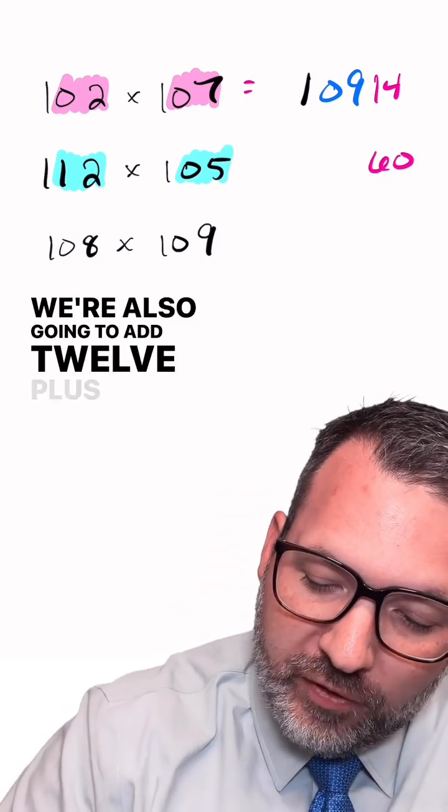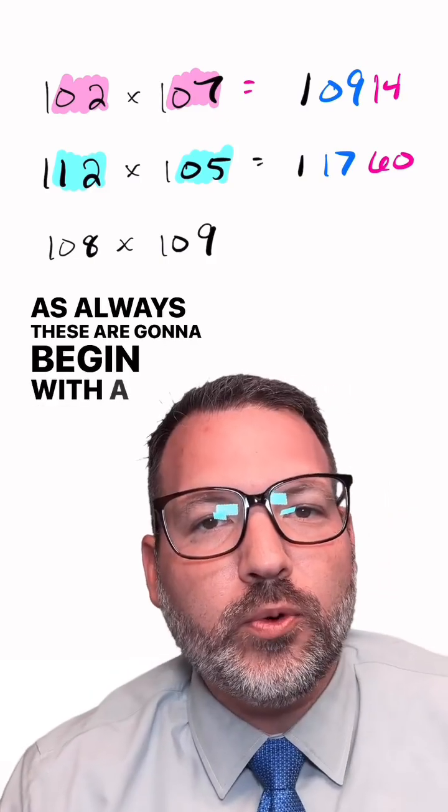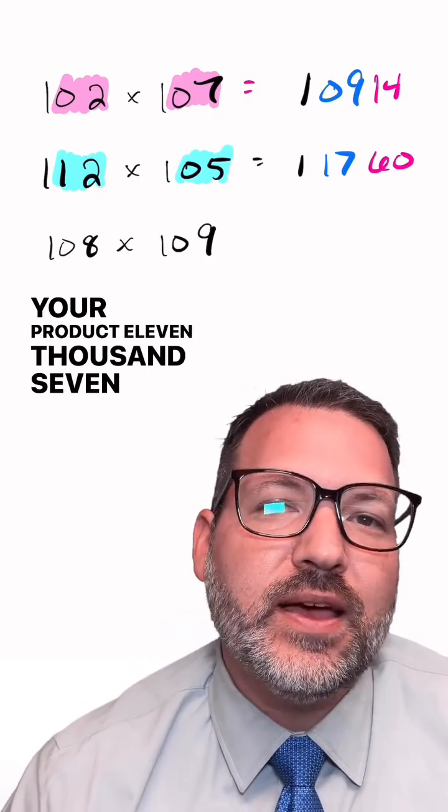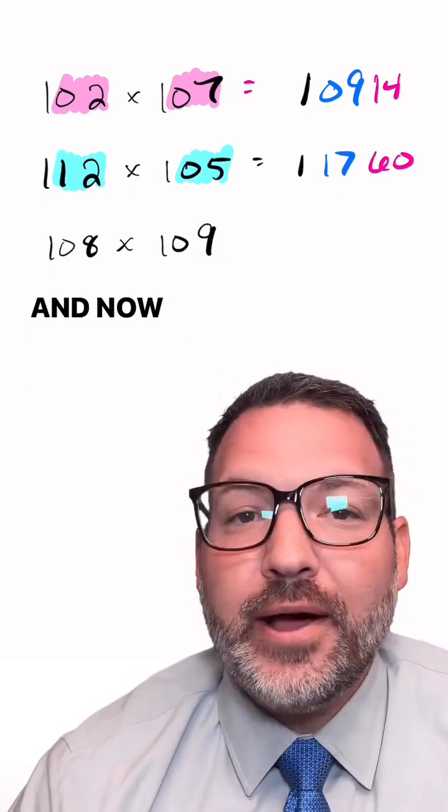We're also going to add 12 plus five makes 17. And as always, these are going to begin with a one. And so there's your product, 11,760. The last problem I leave here as a challenge to the viewer, and now you know.